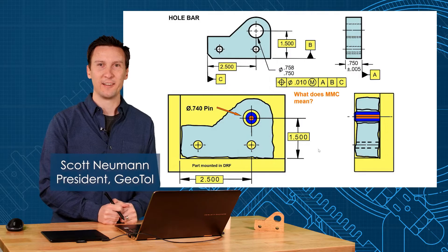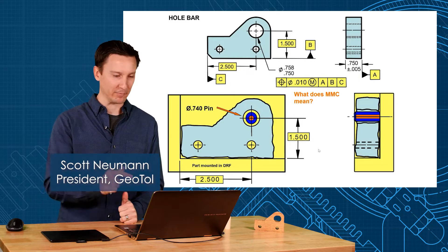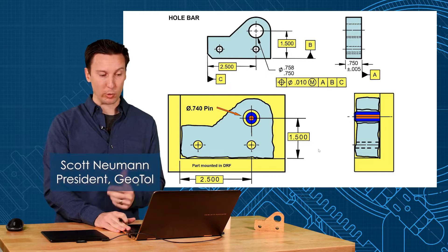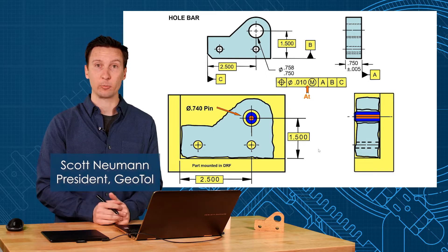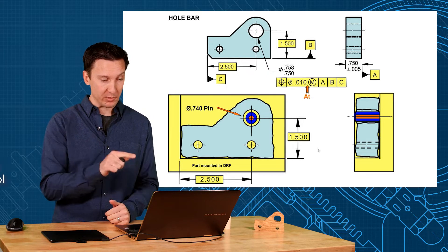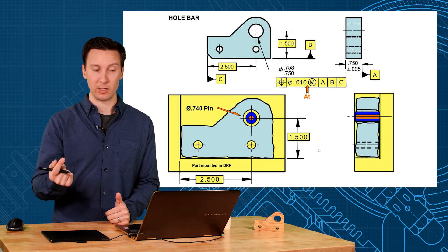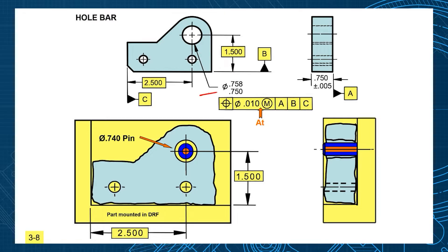Okay, ready to kick it up a notch? This is where it gets exciting. So the MMC modifier - when you read this there's a little missing word you just have to know: 'at'. That helps complete the sentence. It says this hole is positioned within a diameter of 10 at its MMC. So what is the MMC of this hole?